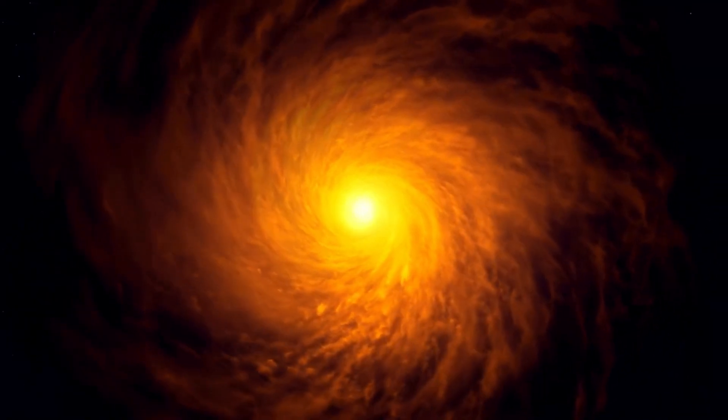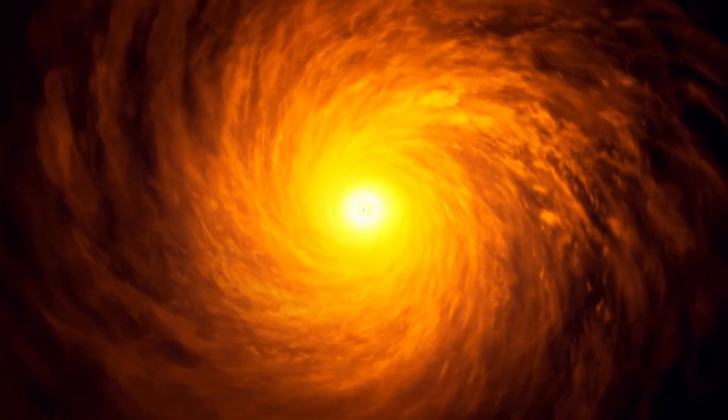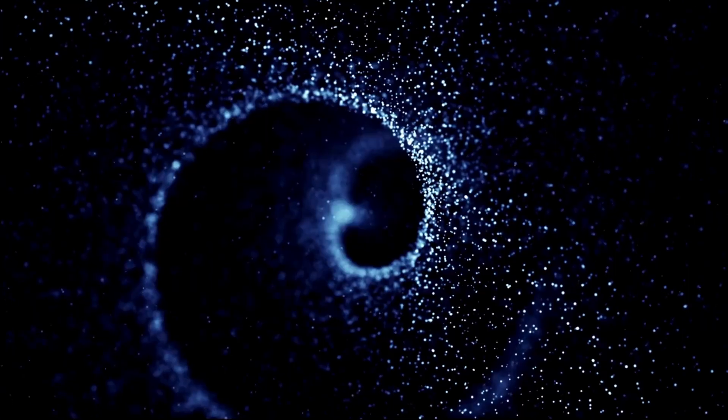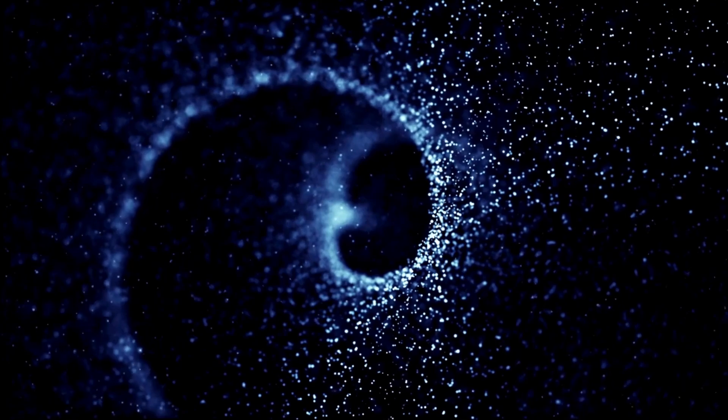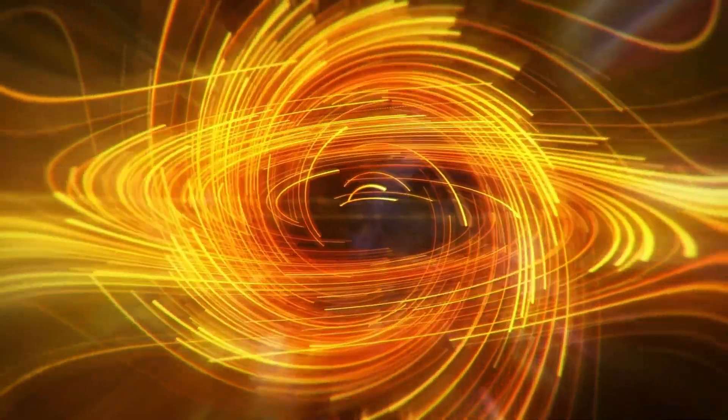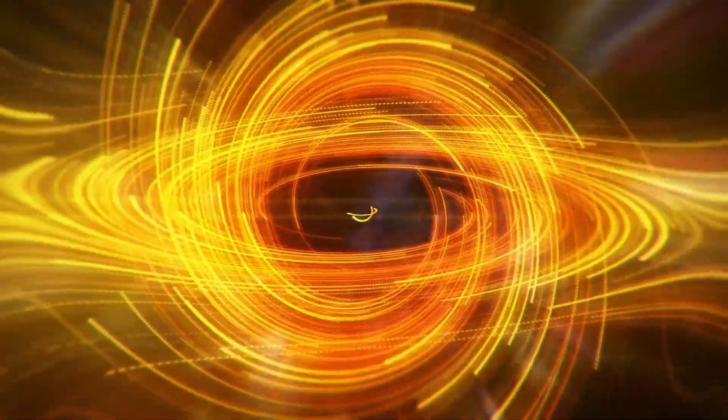The theory of black holes dates back to 1916 when Albert Einstein published his general theory of relativity. This theory predicted the existence of black holes, though at that point, the idea was purely theoretical. It wasn't until about 50 years later, during the 1960s, that concrete evidence for their existence began to surface.